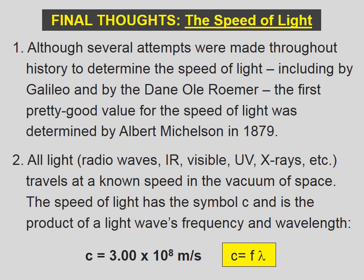Although several attempts were made throughout history to determine the speed of light, including by Galileo and by the Dane Ole Reimer, the first pretty good value for the speed of light was determined by Albert Michelson in 1879. All light — radio waves, infrared, visible, ultraviolet, X-rays, and so on — travels at a known speed in the vacuum of space. The speed of light has the symbol C and is the product of a light wave's frequency and wavelength.